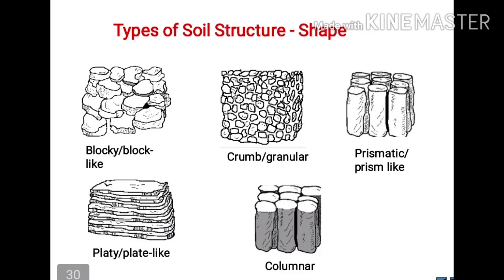The first is the blocky structure and the second is the chrome granular. The third is prismatic, pillar-like with level tops. The fourth is the platy structure, which has disc-like aggregates commonly found in virgin soil and subsoils, and generally makes the soil poorly drained. The last one is a columnar structure, which is also pillar-like with rounded tops, like the prismatic structure.